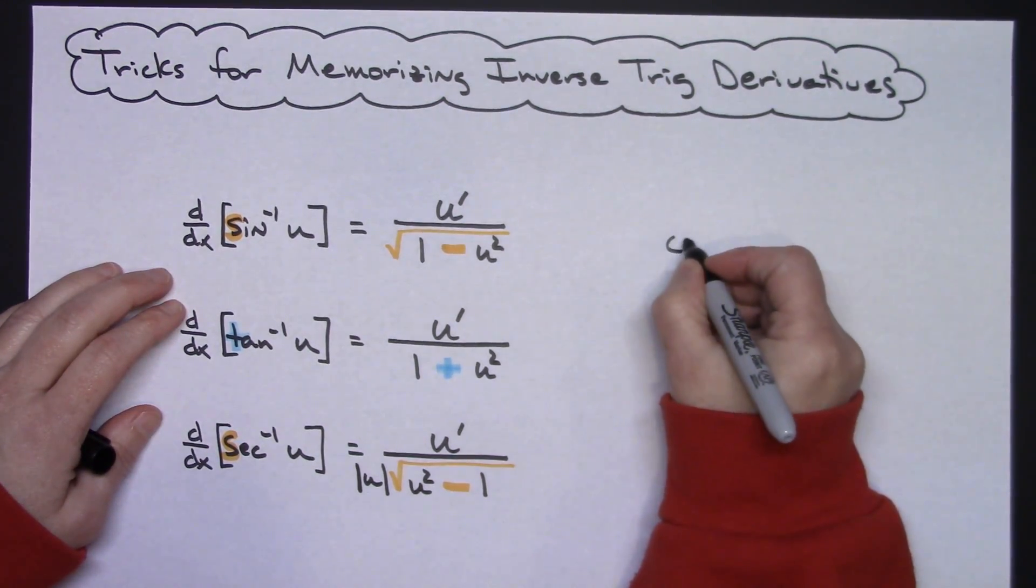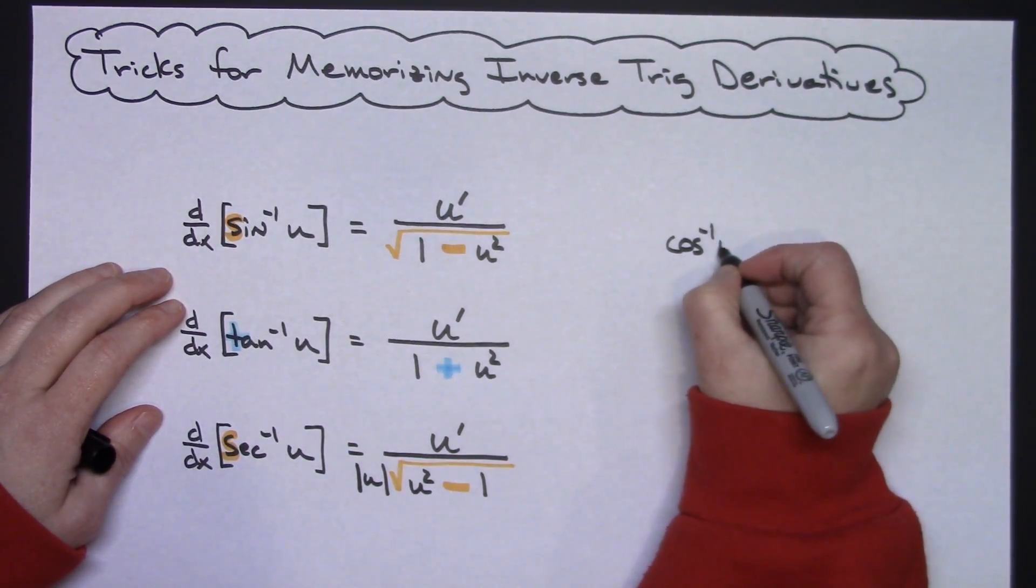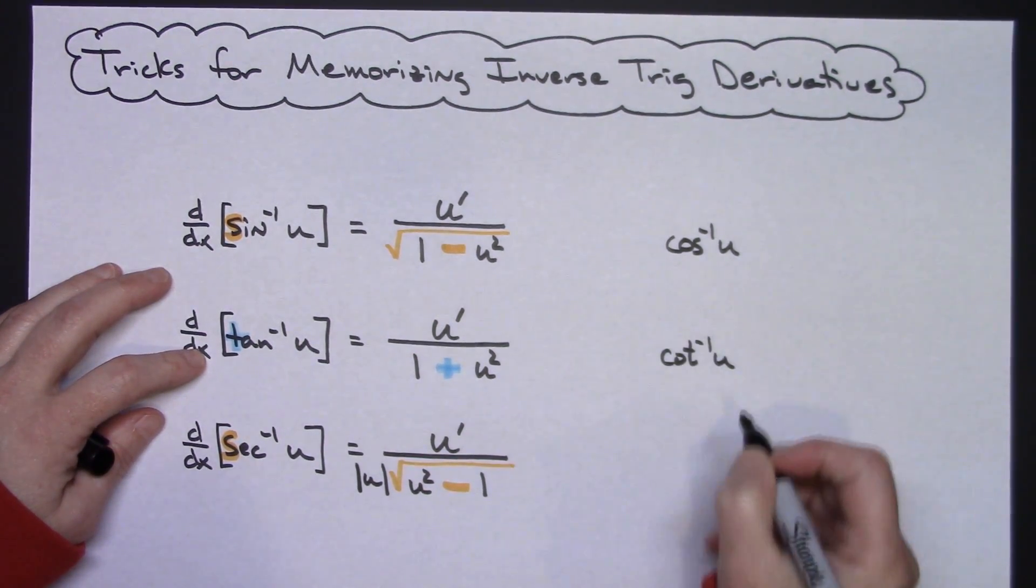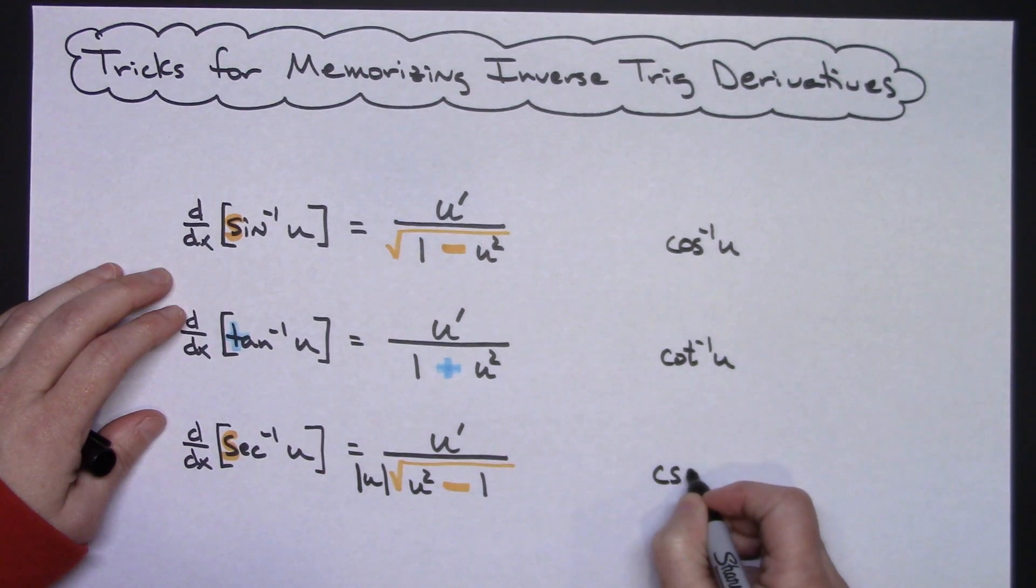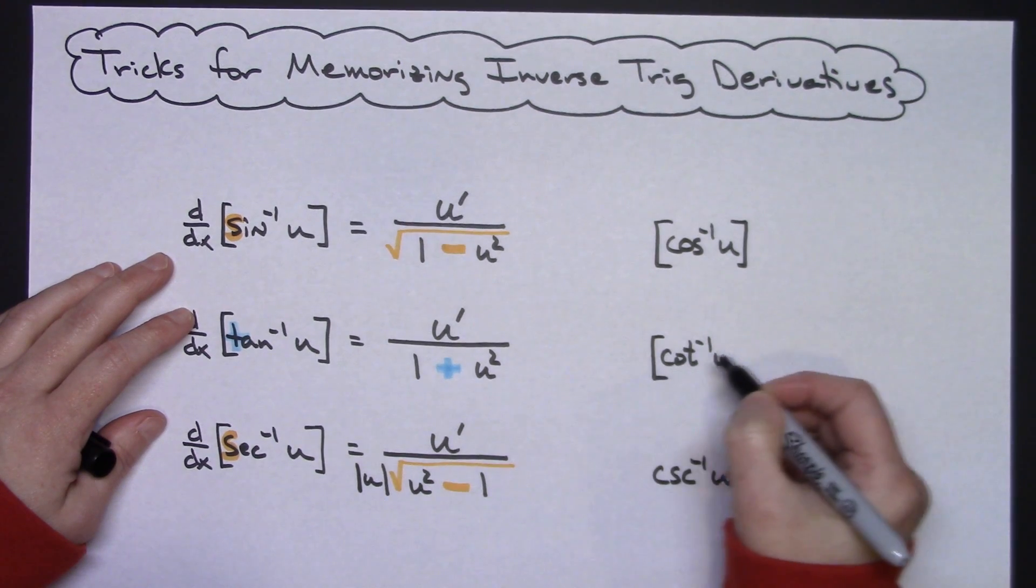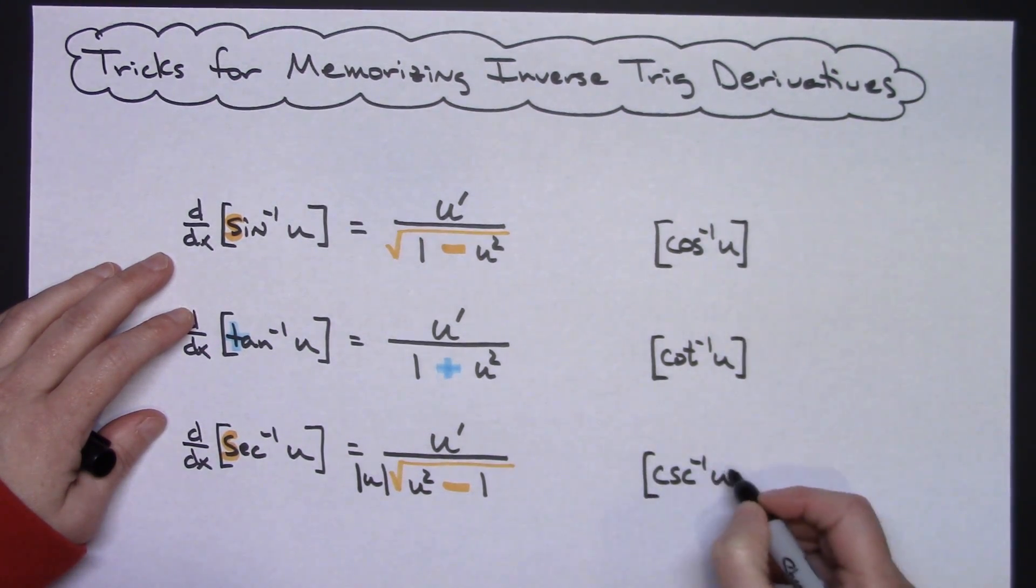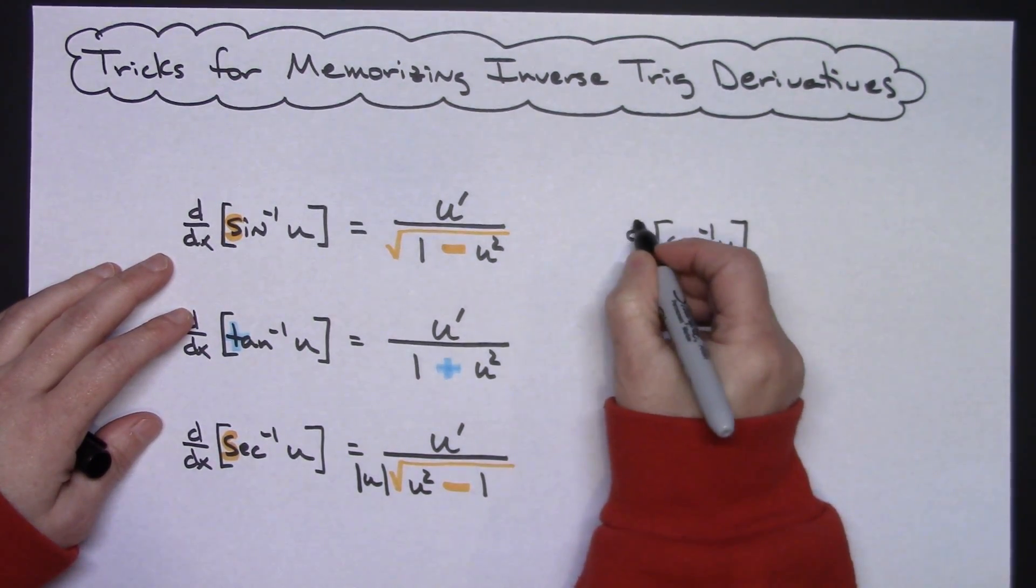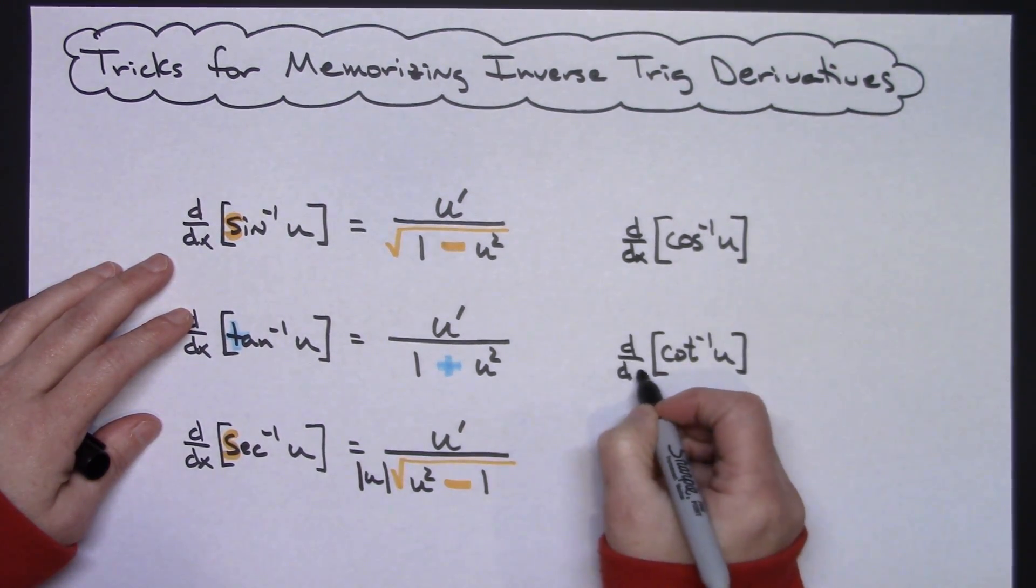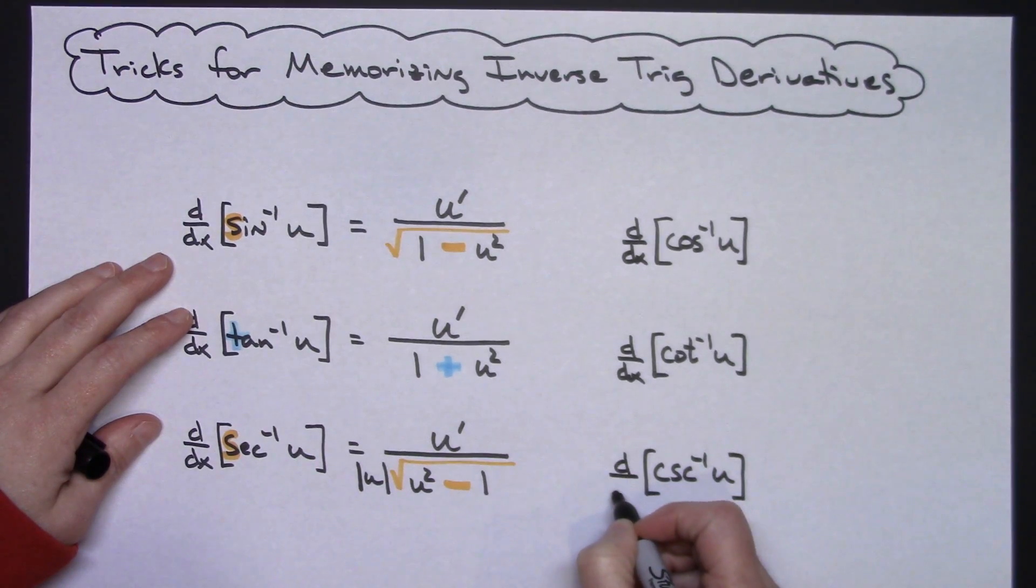So inverse of cosine U, inverse of cotangent U, and inverse of cosecant U. And again if I was writing this out on a test I probably would not take the time to do the d/dx - you're going to know that these are the derivatives. But for the video here we'll go ahead and put that d/dx in front of each one of them.